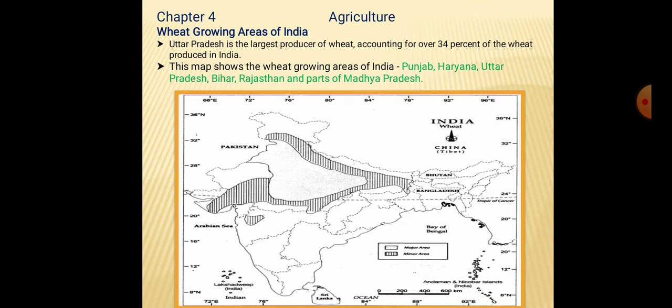Next, map work is on Lesson number 4, Agriculture. Wheat growing areas of India — the most important wheat growing areas are Uttar Pradesh, which is the largest producer of wheat, accounting for over 34% of wheat production in India. The wheat growing areas are Punjab, Haryana, Uttar Pradesh, Bihar, Rajasthan and parts of Madhya Pradesh.